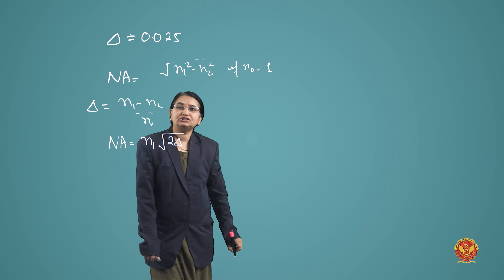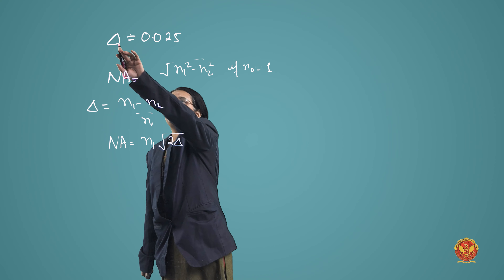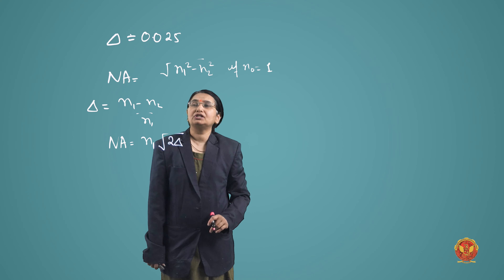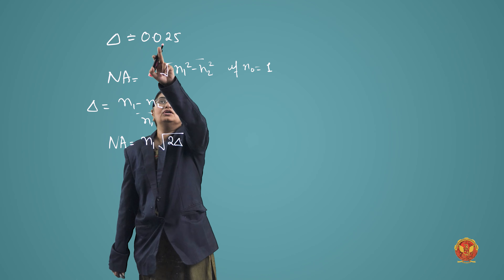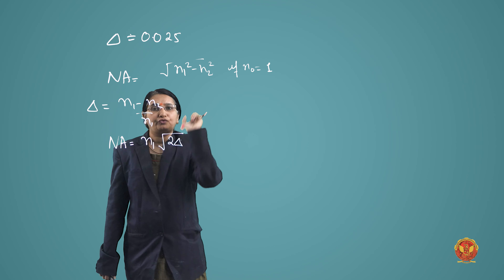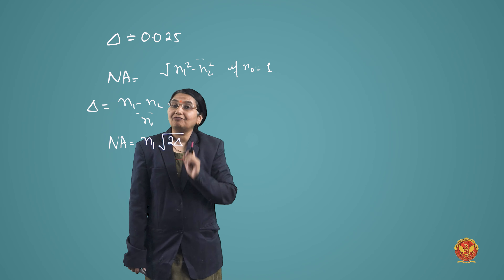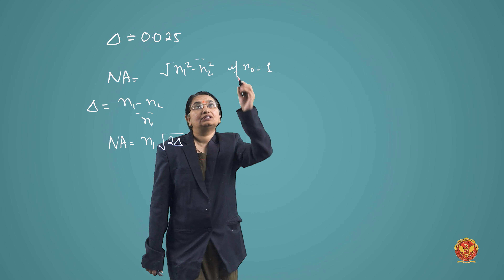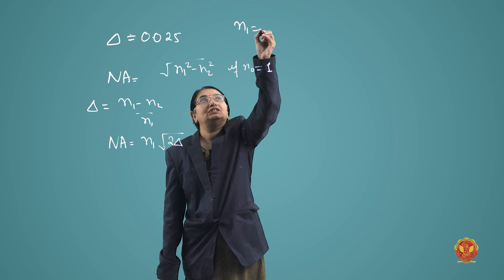So what was delta — the fractional change in refractive index? Delta is given as 0.025. And what was n1 given? n1 is given as 1.36.